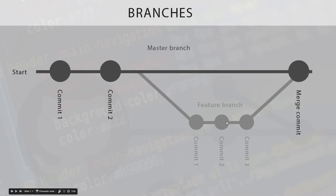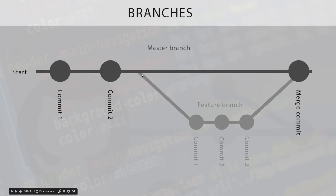If everything goes wrong in the branch — you've tested things out and it messes the code up or doesn't work — we can just delete that branch and it's not going to affect the master branch at all; it's still stable and hasn't been touched. That's why we use branches. Another cool thing about branches is if we have two developers working on the same project at the same time doing two different features, one developer can make a branch for one feature and the other makes a branch for the other. They can both work on these features in their own branches at the same time, and when each one is finished they can merge back into the master branch.